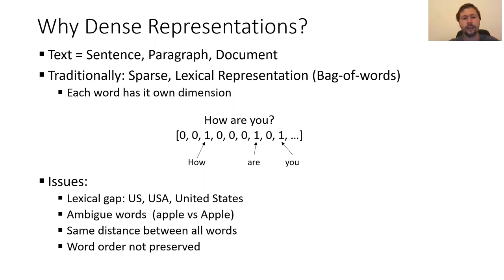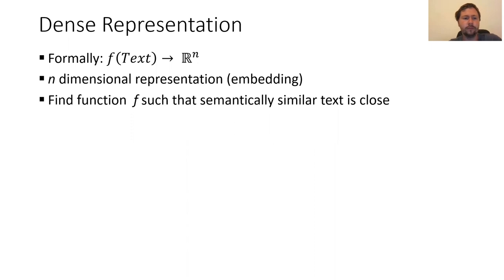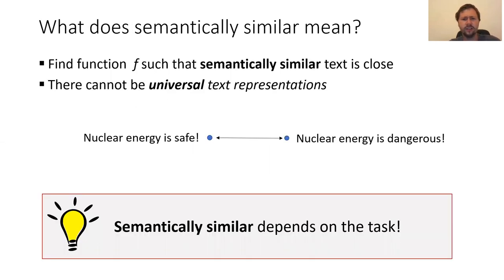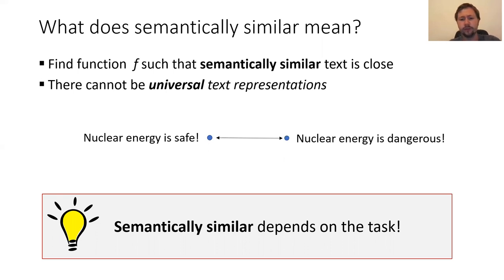You also have the same distance between all words, so the distance between US and USA is the same as US and apple. And word order is not preserved. A dense representation maps text to some n-dimensional vector space, typically between 100 and 1000 dimensions. The interesting task is finding a function where semantically similar text is close. However, there cannot be a universal text representation — for example, 'nuclear energy is safe' and 'nuclear energy is dangerous' may be close or far depending on your task.